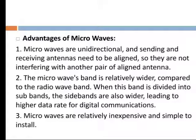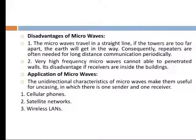Microwave is relatively inexpensive and simple to install. Disadvantages of microwave: Microwaves travel in a straight line, so if towers are too far apart, the earth will get in the way. Consequently, repeaters are often needed periodically for long-distance communication. Additionally, very high-frequency microwaves cannot penetrate walls, which is a disadvantage if the signal needs to be received inside a building.